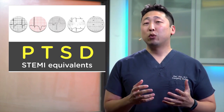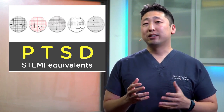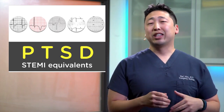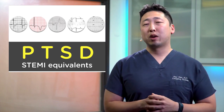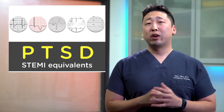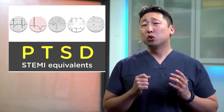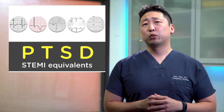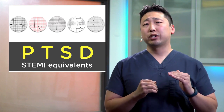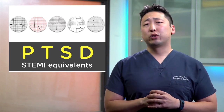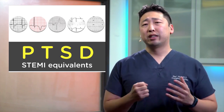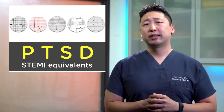T is for T-wave abnormalities such as Wellens, with the deep symmetric inverted T-waves in the right precordial leads, or the other T-wave abnormality, De Winter's T-waves, with the ST depression and the tall upright symmetric T-waves in any of the precordial leads.